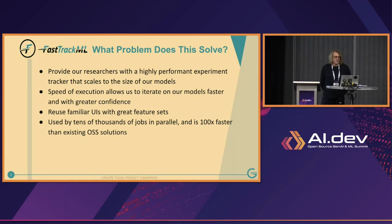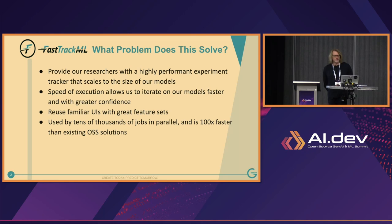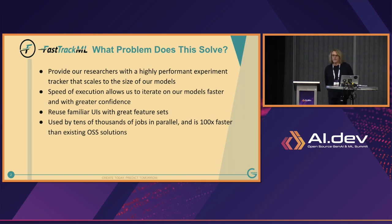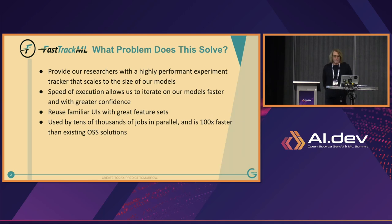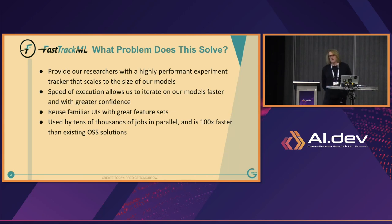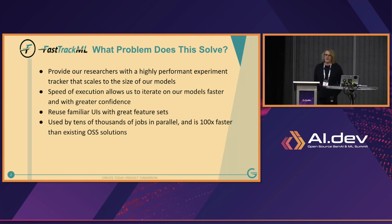What problem are we trying to solve here — which, by the way, is a great question to get any meeting back on track. We wanted to provide our researchers at G Research with a highly performant experiment tracker. We run extremely large financial prediction models that utilize a lot of data, and we really needed to be able to iterate quickly on them and get our models up to snuff and out the door faster. One of our goals was to find something with a great UI and rich feature set, because we didn't really want to get into the business of being UX people or front-end developers, since none of that is core to our mission.